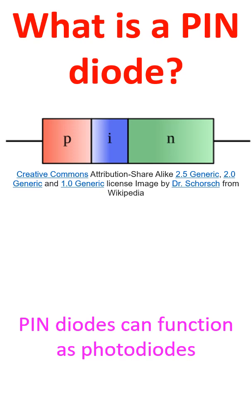The intrinsic region is flooded with charge carriers from the P and N regions in what is known as high level injection. PIN diodes will conduct current once the flooded electrons and holes reach an equilibrium point with equal numbers of electrons and holes in the intrinsic region. While the PIN diode functions like a standard diode at low frequencies, it works almost like a perfect resistor at high frequencies, even for large signals.